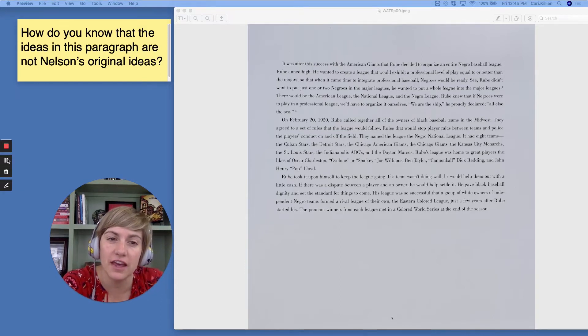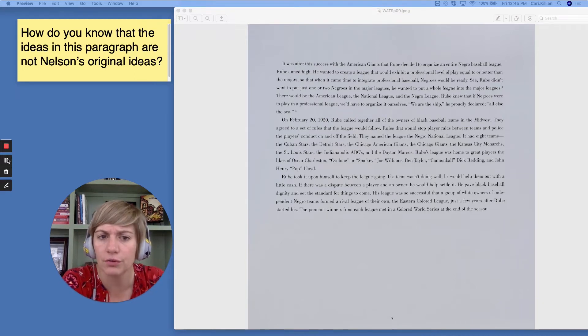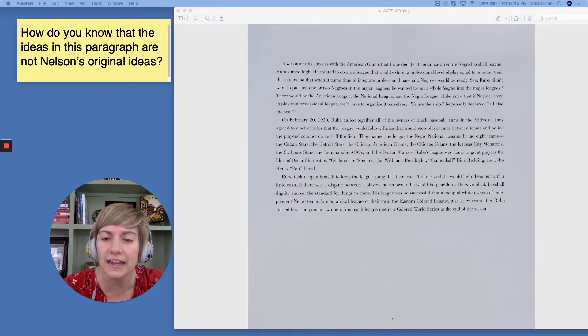It was after this success with the American Giants that Rube decided to organize an entire Negro baseball league. Rube aimed high. He wanted to create a league that would exhibit a professional level of play equal to or better than the majors, so that when it came time to integrate professional baseball, Negroes would be ready. See, Rube didn't want to put just one or two Negroes in the major leagues. He wanted to put a whole league into the major leagues. There would be the American League, the National League, and the Negro League. Rube knew that if Negroes were to play in a professional league, we'd have to organize it ourselves. We are the ship, he proudly declared, all else the sea.